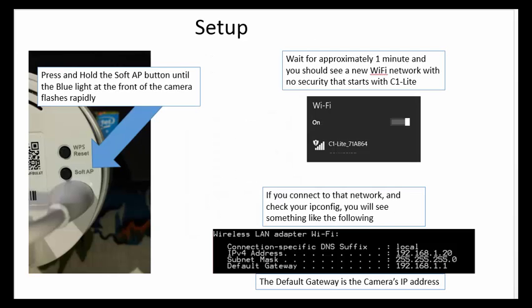The big trick is right on the back of the camera there's a button that says soft AP. Just press and hold that button for a few seconds. The blue light at the front of the camera will rapidly flash. Then just wait about a minute — it takes about a minute, I don't know why, it just does. And then in your WiFi networks you'll see a brand new one that says C1 light something or other, and it's usually the last six digits of the MAC address.